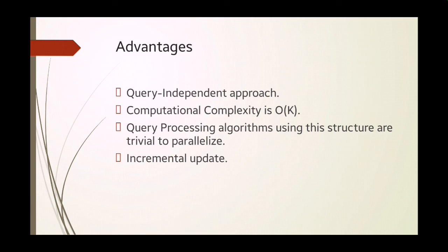The advantages of Sting clustering are as follows. It is a query independent approach since the statistical information exists independently of queries. The computational complexity is O of K, where K is the number of query cells at the lowest level. Usually K is less than n, where n is the number of objects. Query processing algorithms using this structure are trivial to parallelize. When data is updated, we need not recompute all information in the cell hierarchy. Instead we can do an incremental update.